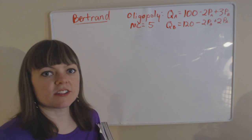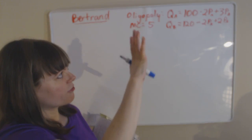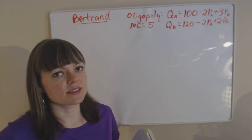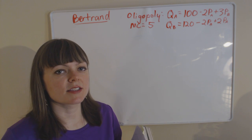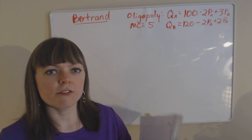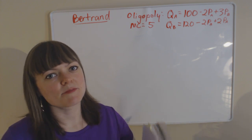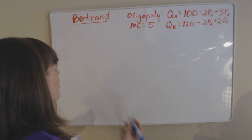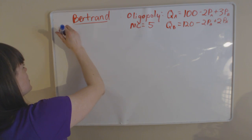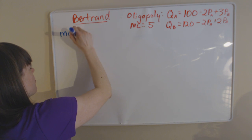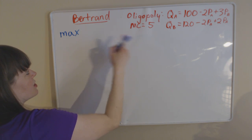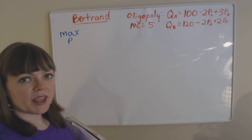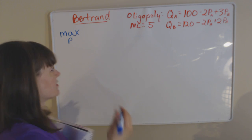So how do we start this? We're going to have to solve firm A's problem and firm B's problem separately, since it's a simultaneous moves game, and solve for their best response functions and then plug those into each other. That's our strategy going forward. So let's set up firm A's maximization problem. Bertrand oligopoly means we're choosing the price — that's our choice variable.